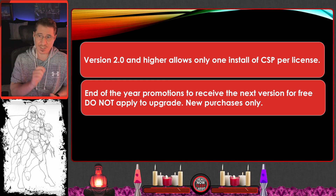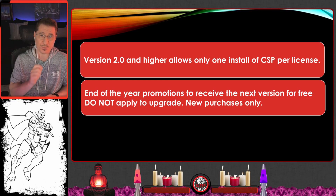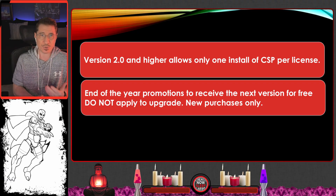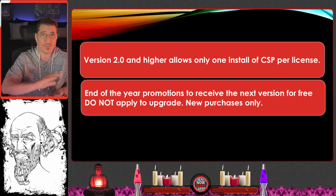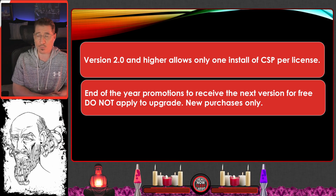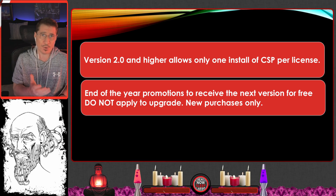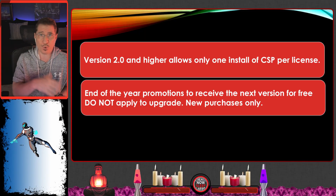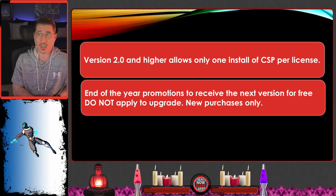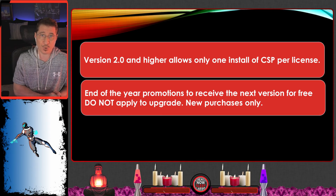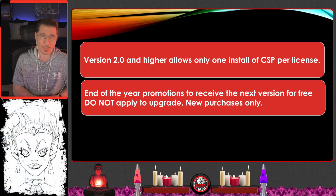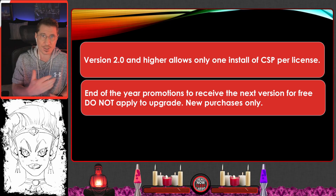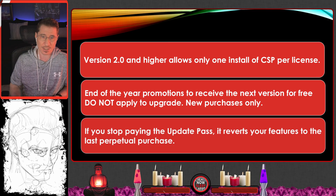End-of-year promotions to receive the next version for free do not apply to upgrades — it's new purchases only. With annual models, if you buy right before a new version releases, they'll run promotions like 'buy 3.0 now and get 4.0 for free.' Last year we learned they did that for new owners but not for people who were upgrading. So if you're holding out hoping for a two-for-one deal at year-end while upgrading, that's not going to happen.